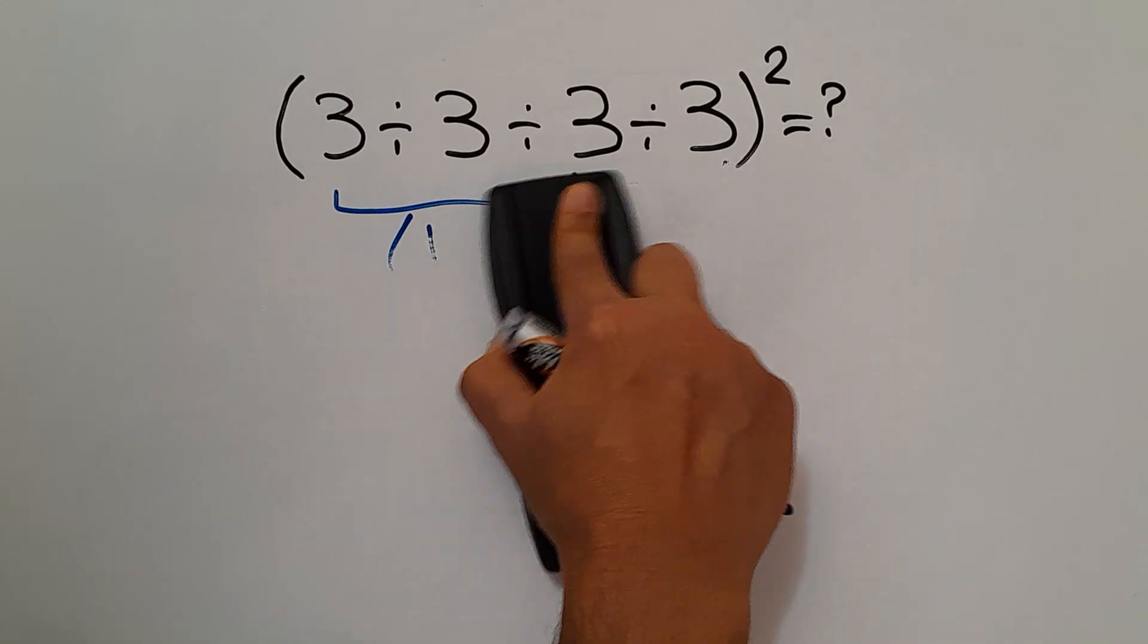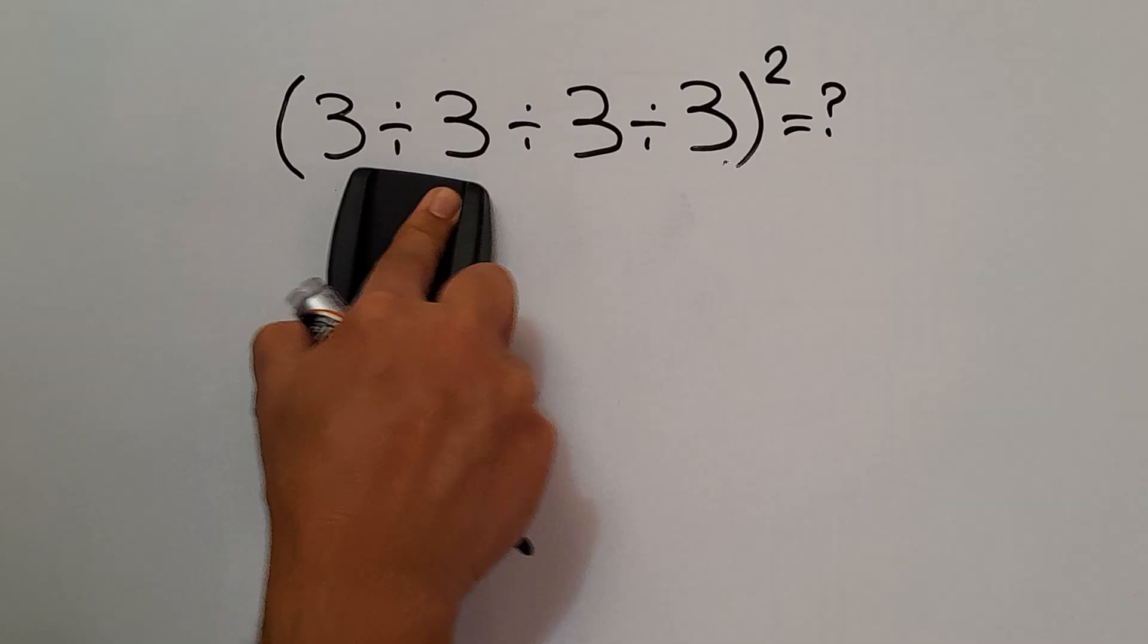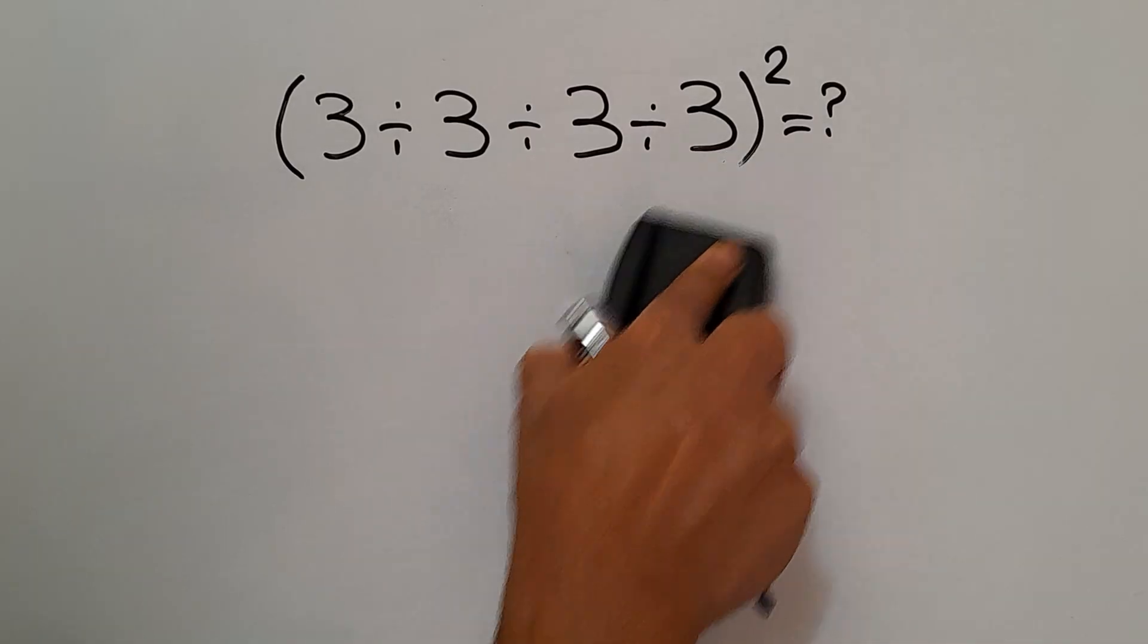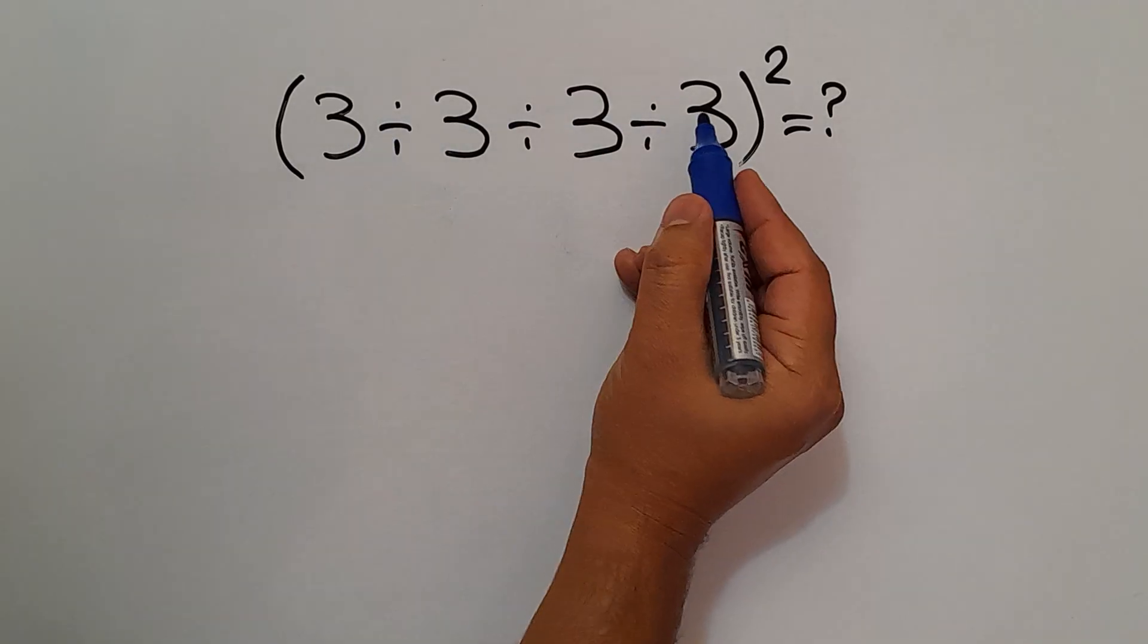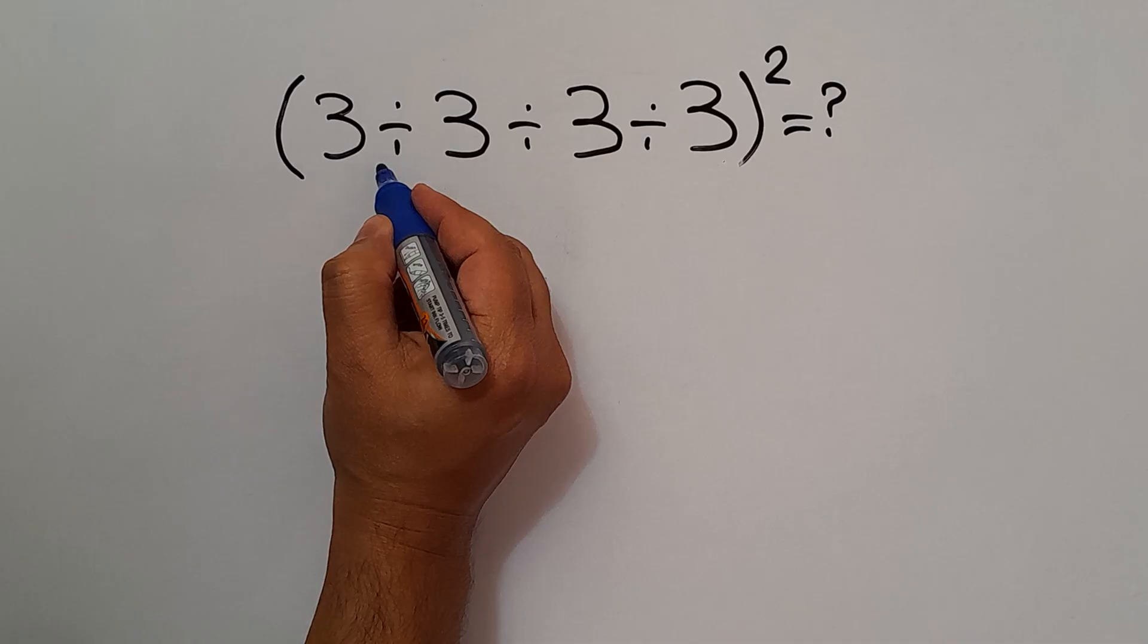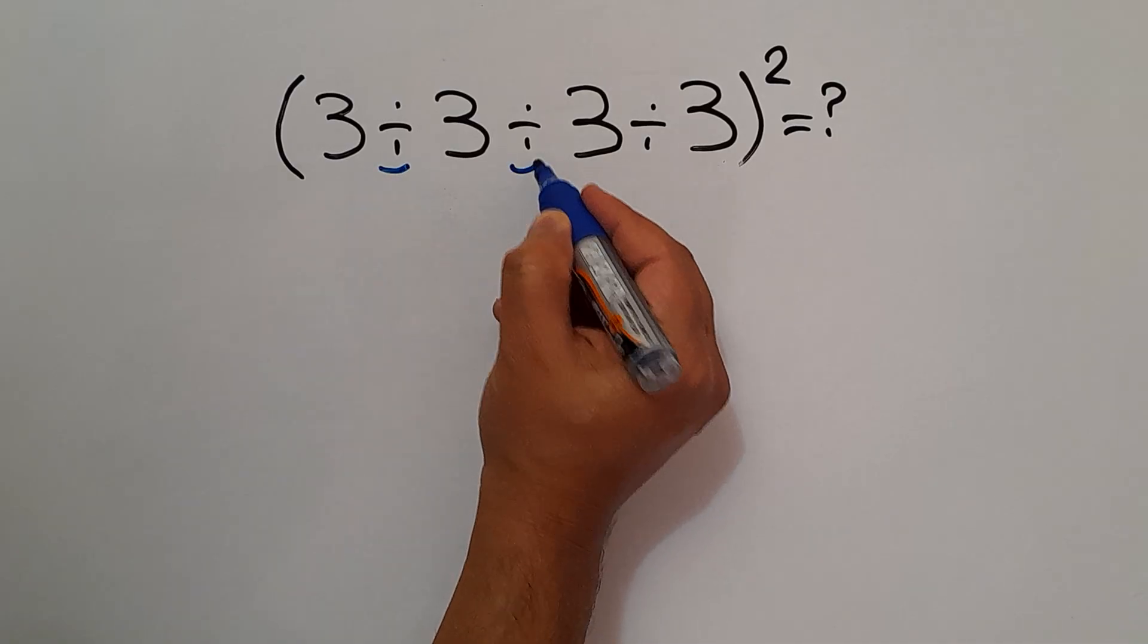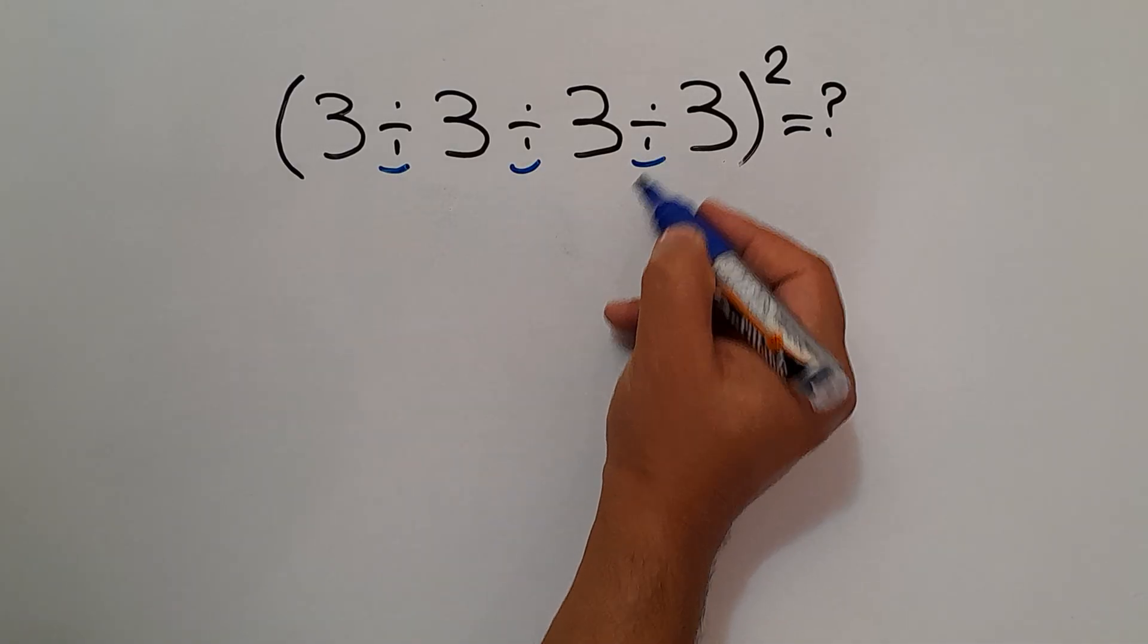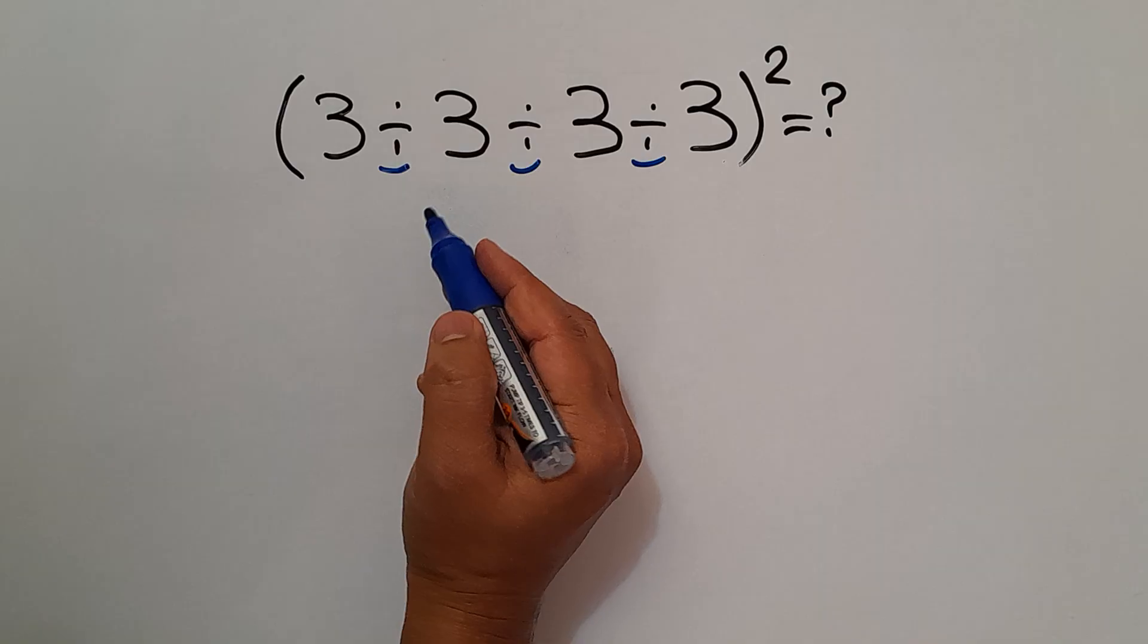Because according to the order of operations, we have to work from left to right. So, first this division, then this division, and finally this division in the base.